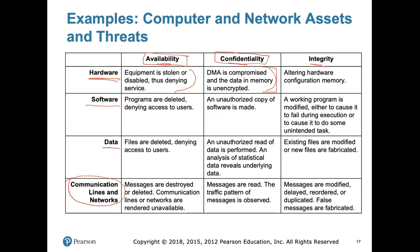A third example: if our configuration memory — the part of memory that stores system information such as how many I/O devices we have, interrupt vector addresses, and which range of hard disk addresses stores the operating system — is altered, what we lose is the integrity of the whole system. That configurational data, if modified, compromises system integrity.